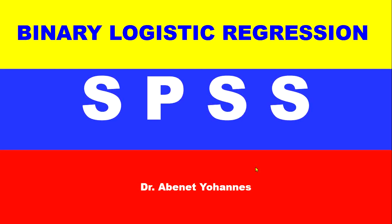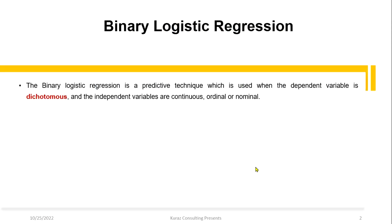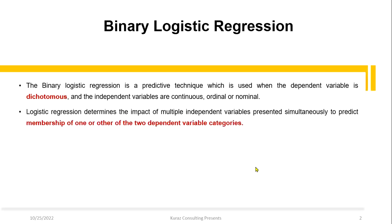This tutorial covers data analysis using SPSS, specifically binary logistic regression. Binary logistic regression is a predictive technique used when the dependent variable is dichotomous and the independent variables are continuous, ordinal, or nominal. Logistic regression determines the impact of multiple independent variables presented simultaneously to predict membership of one or the other of the two dependent variable categories.